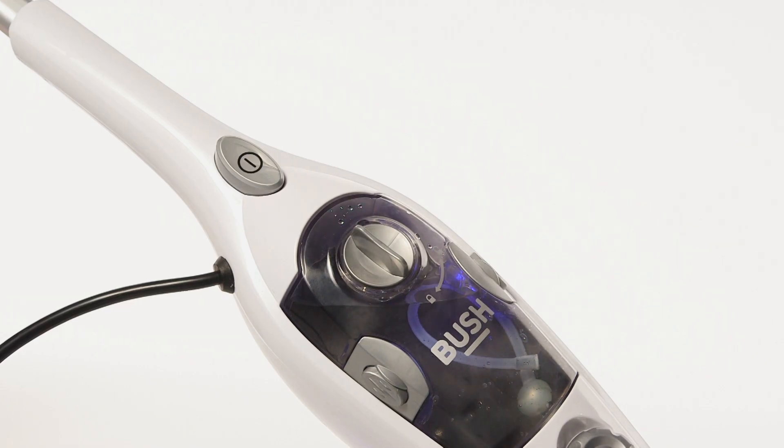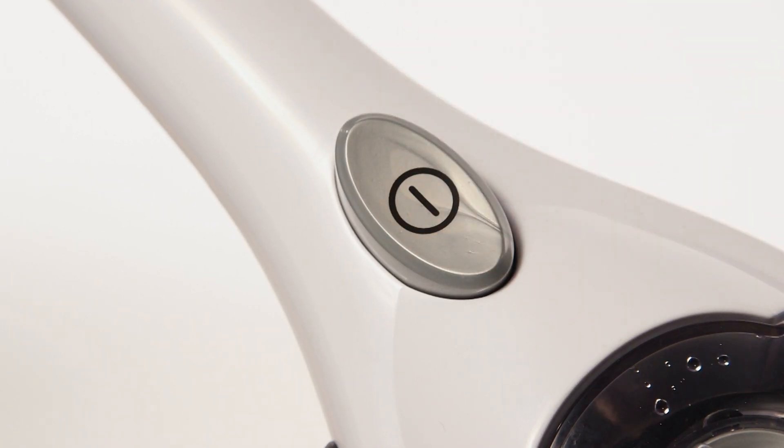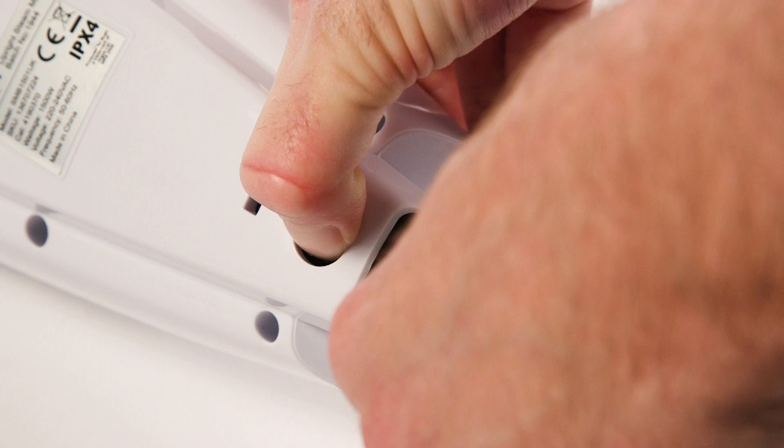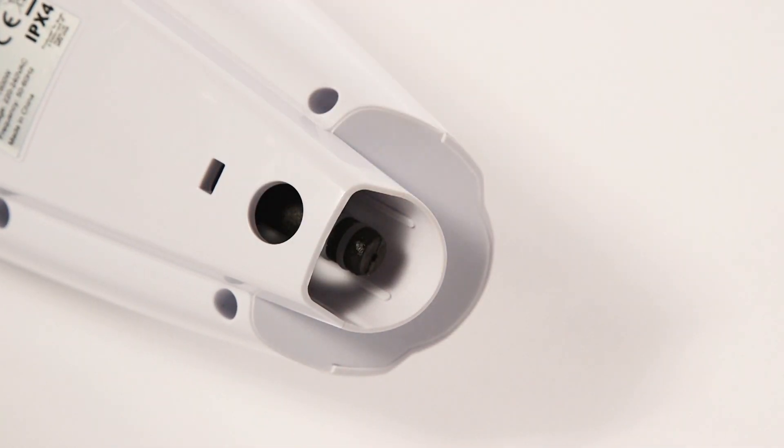When disconnecting the floor head, ensure that the steam cleaner is switched off and it is cooled down. Press the release button and pull the floor head away from the steam cleaner body.